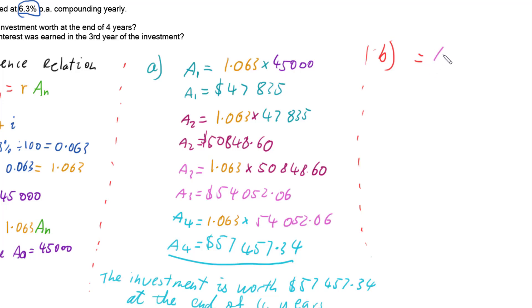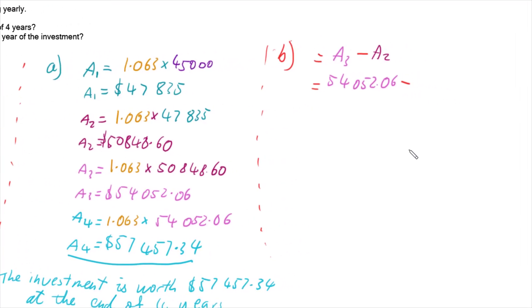So that means that we're going to work out what is our A_3, our end of our third year, minus off our A_2, the end of our second year. So we're going to have $54,052.06.